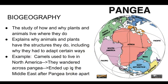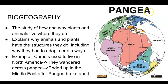Another thing we use is biogeography. When you look at a map of Pangea — which you've learned about in eighth grade earth and space science — you can see how at one point we had this supercontinent where all the continents were together as one. Biogeography is the study of how and why plants and animals live where they do. It explains why animals and plants have the structures they do, including why they had to adapt in certain ways. Based on fossil records, where the continents were once connected, you can see fossils along those coastlines that match up to support evidence for Pangea.